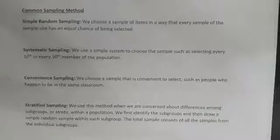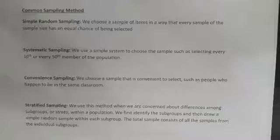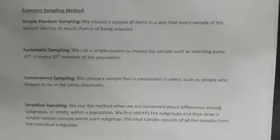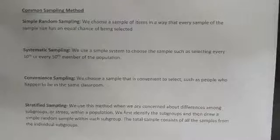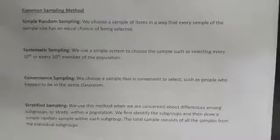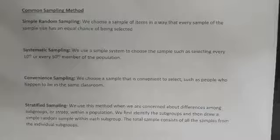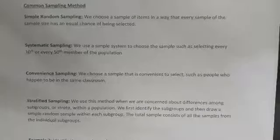Systematic sampling uses a simple system — like selecting every fifth or tenth person. In a class, you'd count one, two, three, four, five and ask that person their opinion. For example, every 10th customer, every 50th person, or pulling every 10th name from the phone book.